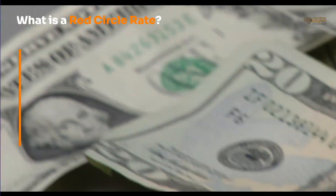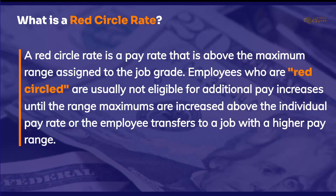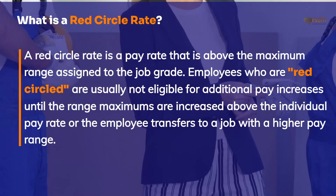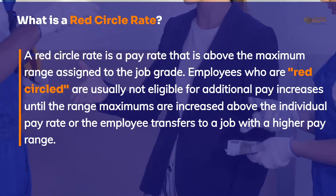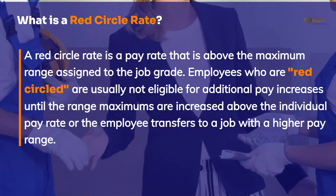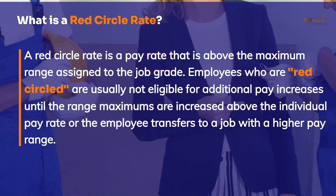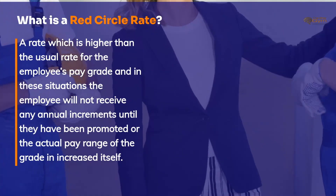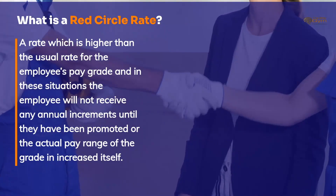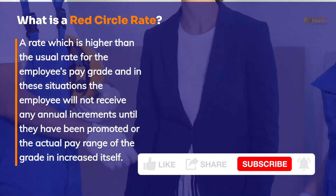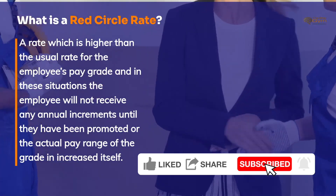What is a red circle rate? A red circle rate is a pay rate that is above the maximum range assigned to a job grade. Employees who are red circled are usually not eligible for additional pay increases until the range maximums are increased above the individual pay rate, or the employee transfers to a job with a higher pay range. In simpler terms, this is a rate which is higher than the usual rate for the employee's pay grade, and the employee will not receive any annual increments until they have been promoted or the actual pay range of the grade is increased itself.